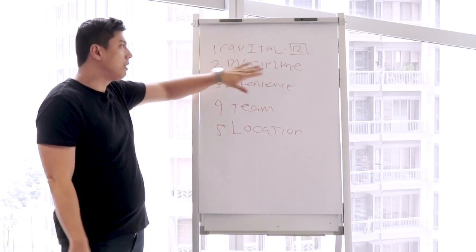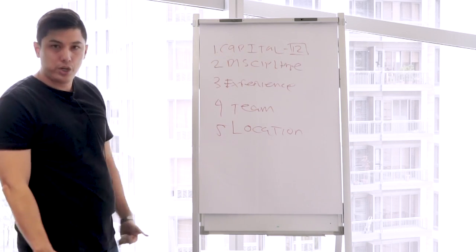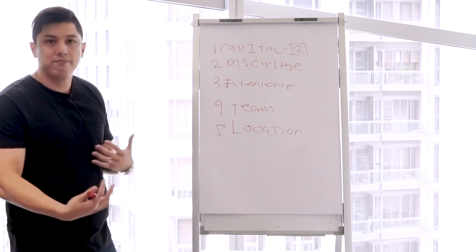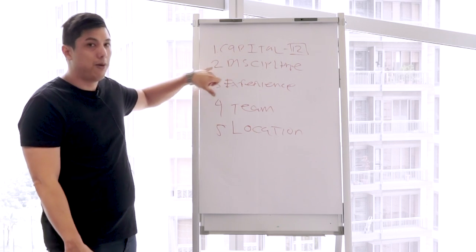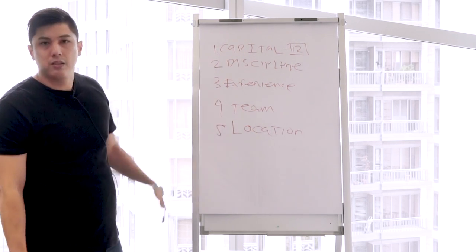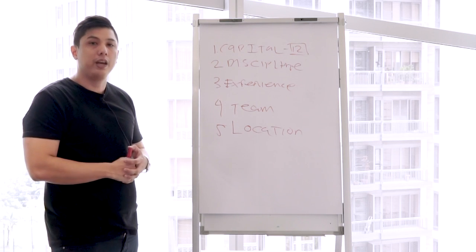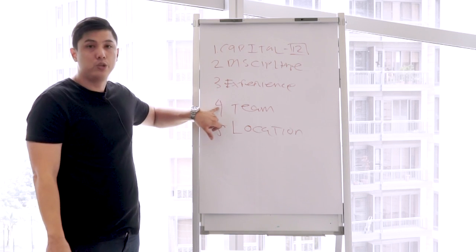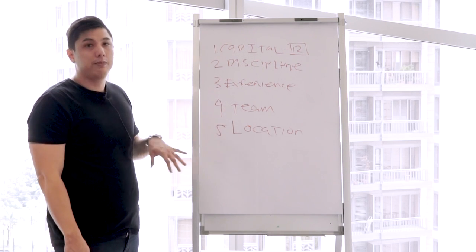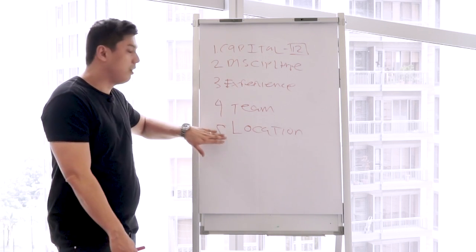So again, you have to have the capital. Make sure you have capital for about 12 months. Make sure you have the checklist. There's like so many books about this. Discipline. This is something you got to work on. This is mindset. Experience, get a collective people who can give you the proper advice and shadow them. Who's your dream team? Make sure your team supports you and you support your team. Location.